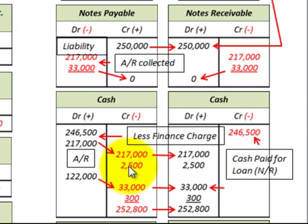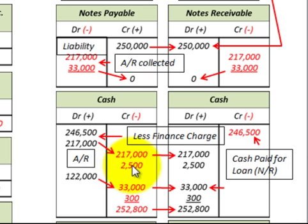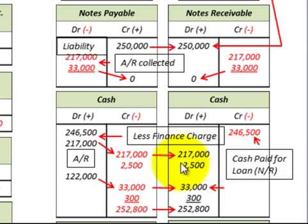We also had $2,500 in interest expense based on the outstanding notes payable balance of $250,000. Corporation A reduces their cash account by $2,500 for that interest expense, and Bank B recognizes it as cash received — interest revenue of $2,500.